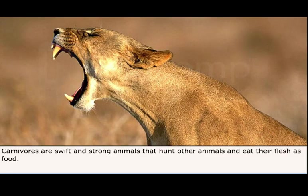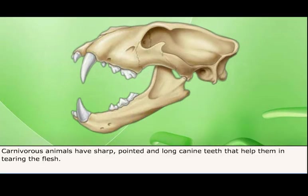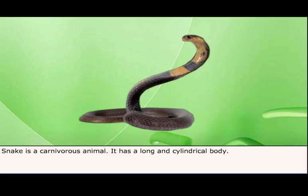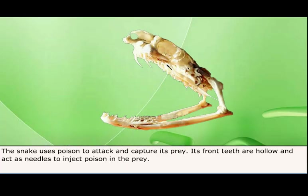Carnivores are swift and strong animals that hunt other animals and eat their flesh. Carnivorous animals have sharp, pointed, and long canine teeth that help them in tearing flesh. The snake is a carnivorous animal with a long and cylindrical body. It uses poison to attack and capture its prey. Its front teeth are hollow and act as needles to inject poison into the prey.